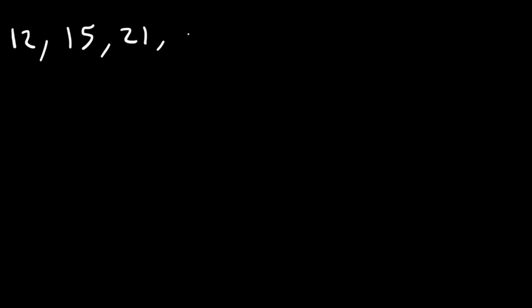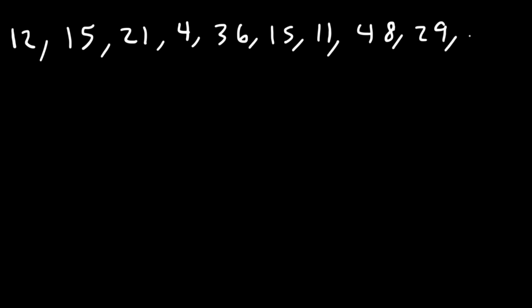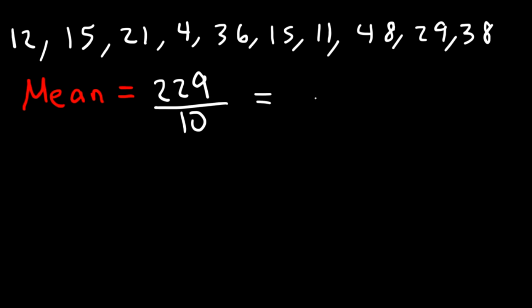Now let's work on one more example. This time we're going to have 10 numbers in a data set instead of 8. The numbers are 12, 15, 21, 4, 36, 15, 11, 48, 29, and 38. Let's begin by calculating the mean — let's add up the 10 numbers. The sum of the 10 numbers is 229. 229 divided by 10 gives us an average of 22.9, so that's the arithmetic mean.